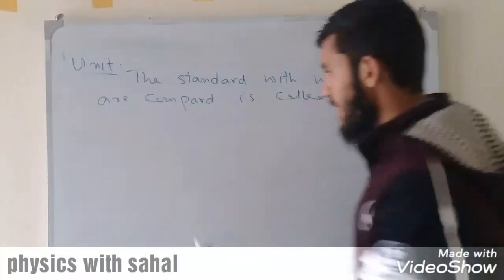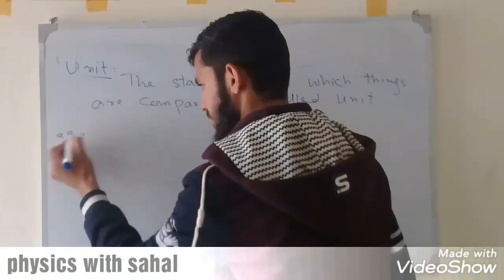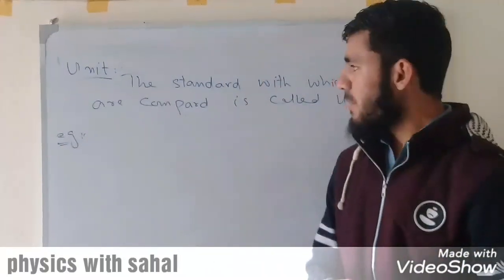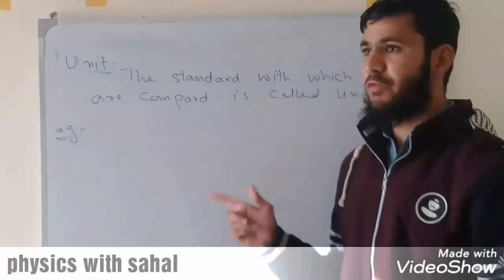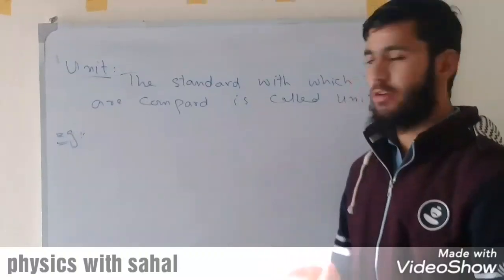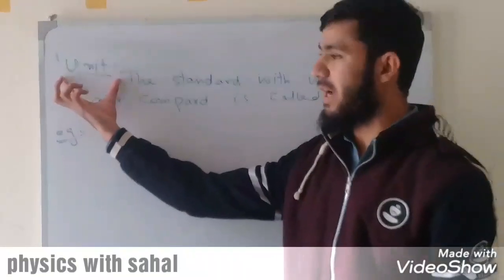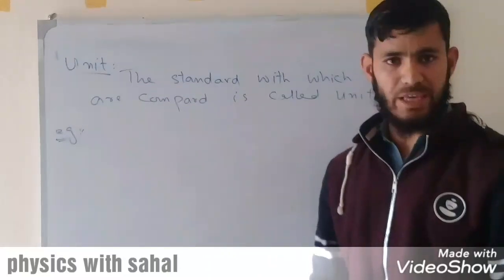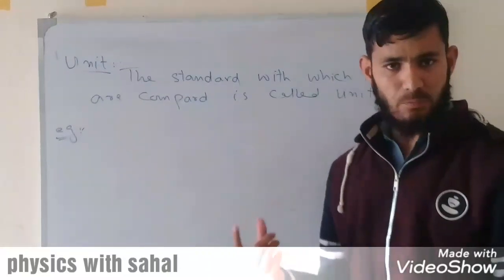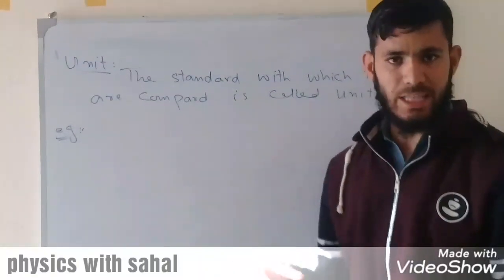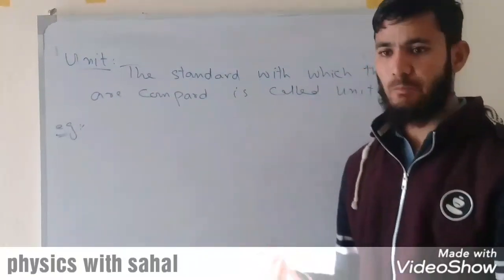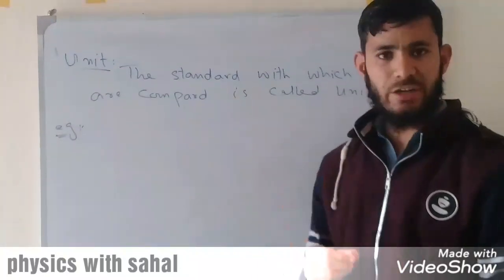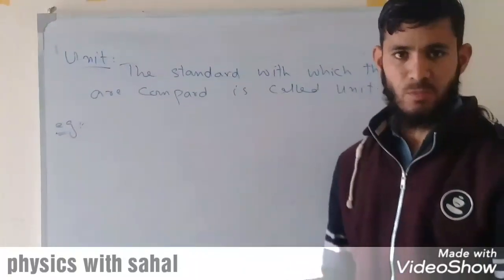For example, we have mass, so we use the standard for mass which is kilogram. So kilogram is the unit for mass. We have length, so we use meter for that. So meter is the standard for length. We also have meter per second, which is the standard for speed or velocity.